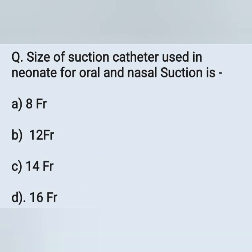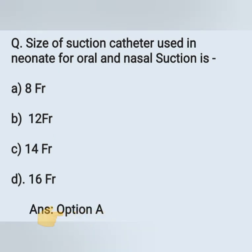Size of suction catheter used in a neonate for oral and nasal suction: Option A: 8 French. Option B: 12 French. Option C: 14 French. Option D: 16 French. The correct answer is 8 French. Option A is the correct answer.